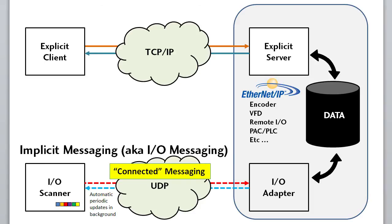Implicit connected message delivery isn't guaranteed because it's UDP, but if you don't get a drive speed or amperage update when you are getting several per second, it's not a big deal if you miss one every now and then.